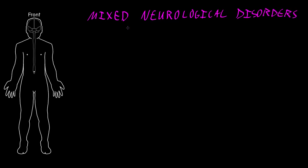Because these disorders can affect both the central nervous system and the peripheral nervous system, they can lead to fairly complex syndromes that can be quite confusing when trying to determine the location of the lesion. And they can affect many neural functions depending on what parts of the central and peripheral nervous system are being affected.